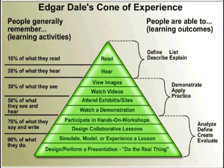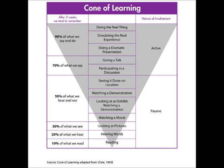Dale went on to expand upon his cone of experience by adapting his ideas in 1969. He summarized his cone by describing that people remember 10% of what they read, 20% of what they hear, 30% of what they see, 50% of what they both hear and see, 70% of what they say, and 90% of what they do. This adaptation simplified the cone of experience and made the concepts much easier to remember, and related the cone in such a way that many educators embrace the idea of the active learner and learning using real-life, non-abstract activities.